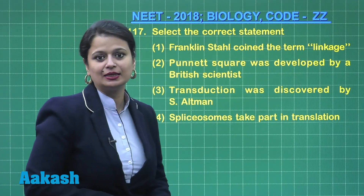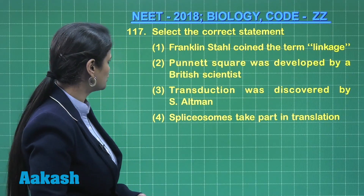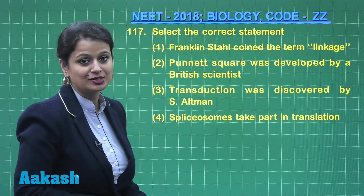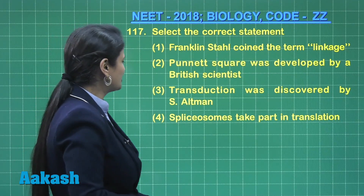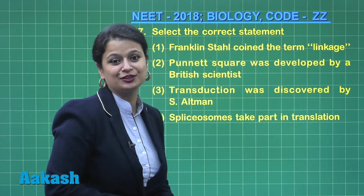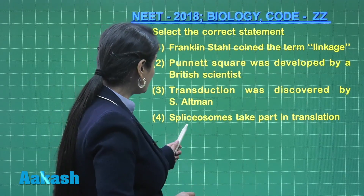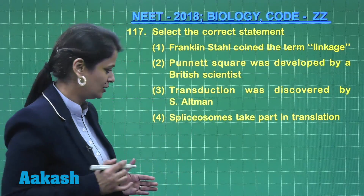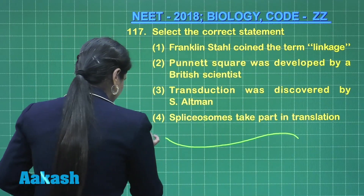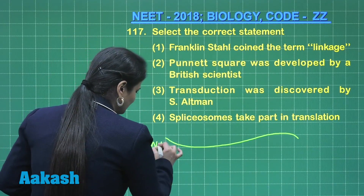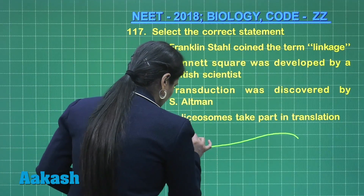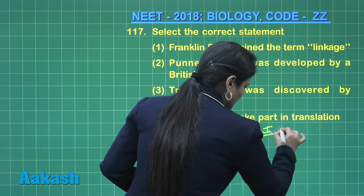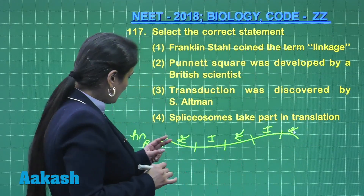Moving on to question 117: 'Franklin Stahl coined the term linkage' — this is wrong; it was coined by T.H. Morgan. 'Punnett square was developed by a British scientist' — yes, he developed it in 1927. 'Transduction was discovered by Altman' — this is wrong; transduction was discovered by Zinder and Lederberg. 'Spliceosomes take part in translation' — no, spliceosomes are involved in removal of introns.